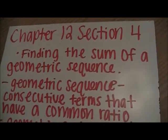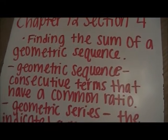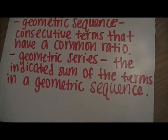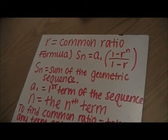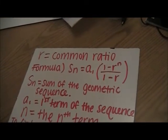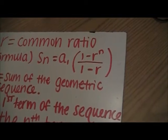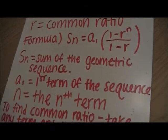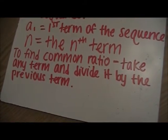Our next section that we did was chapter 12, section 4, and the objective was finding the sum of a geometric sequence. A geometric sequence is consecutive terms that have a common ratio, and the geometric series is the indicated sum of the terms in a geometric sequence. The formula is s sub n equals a sub 1 times the quantity 1 minus r to the nth power, divided by 1 minus r. Here, r equals the common ratio, s sub n equals the sum, a sub 1 is the first term, and n is the nth term. To find the common ratio, you take any term and divide it by the previous term.